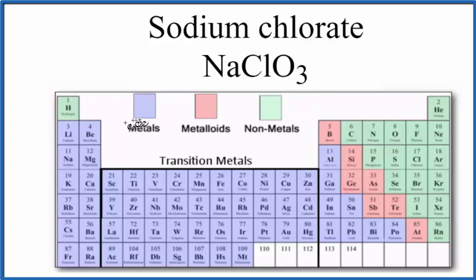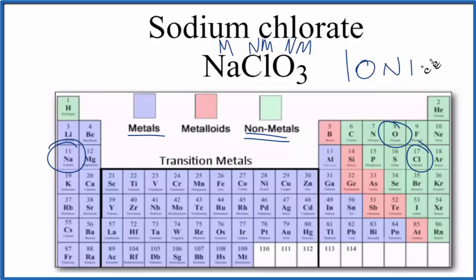When we look at the periodic table, we can see sodium right here. That's a metal. We have chlorine and oxygen. Here's chlorine and here's oxygen. Those are non-metals. So we have a metal bonded to non-metals, which makes it an ionic compound.